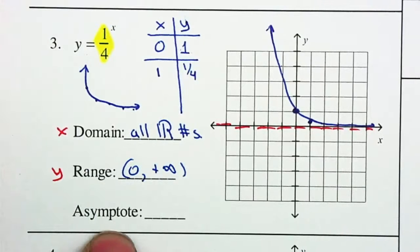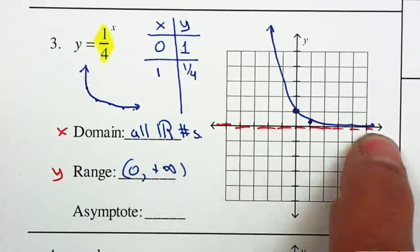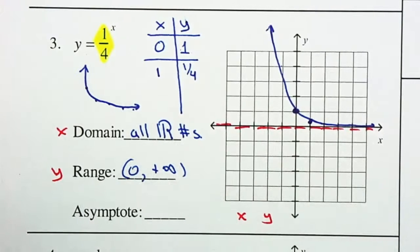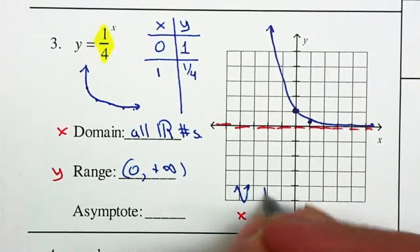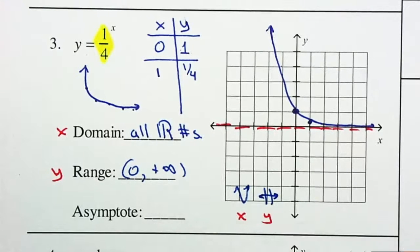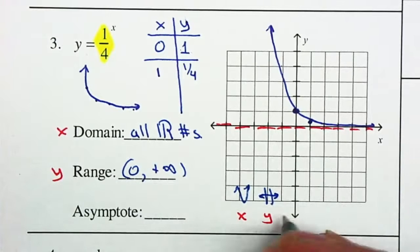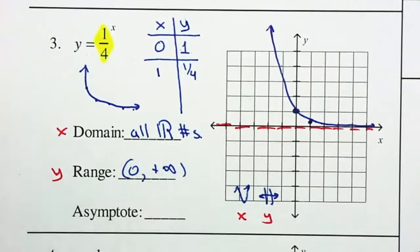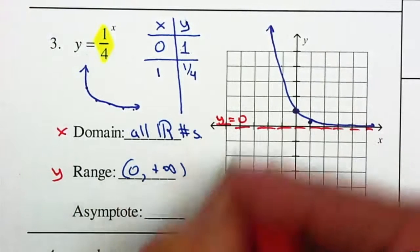And your asymptote. Remember, your asymptote is this dashed line. It's a horizontal line. If it's a vertical line, it will be x equal to a number. If it's a horizontal line, it's y equal to a number. In this case, this is a horizontal line, so it will be y equal to a number. It's crossing the y axis at 0. So it will be y equal to 0.